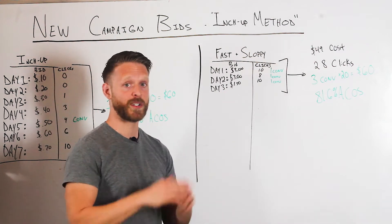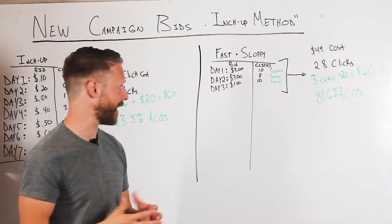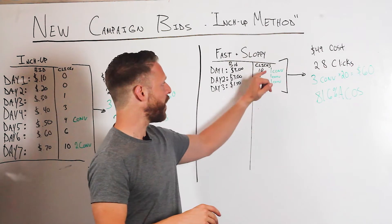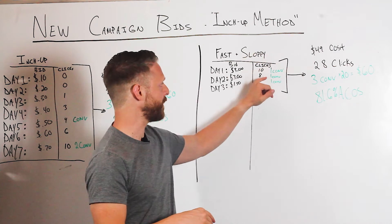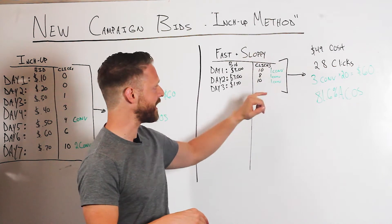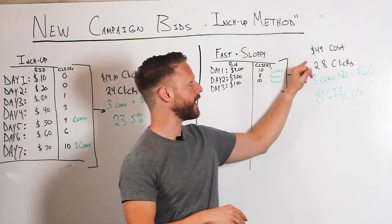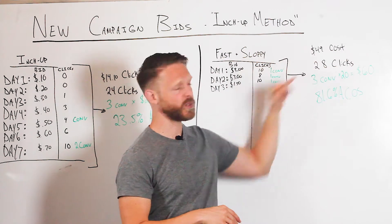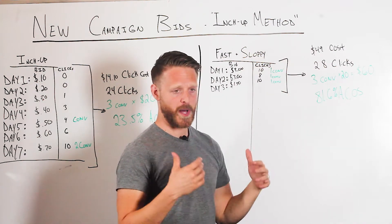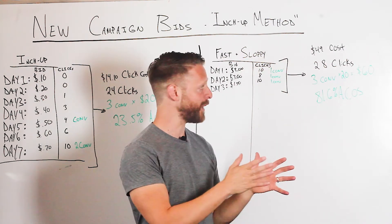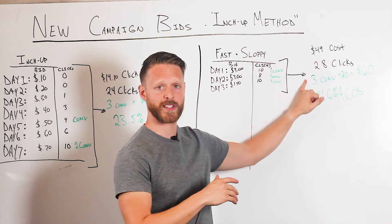That's half of three, but it's still a pretty big bid on Amazon. The clicks they would get per day — maybe ten clicks, eight clicks, ten clicks — totaling forty-nine dollars in spend and twenty-eight clicks.